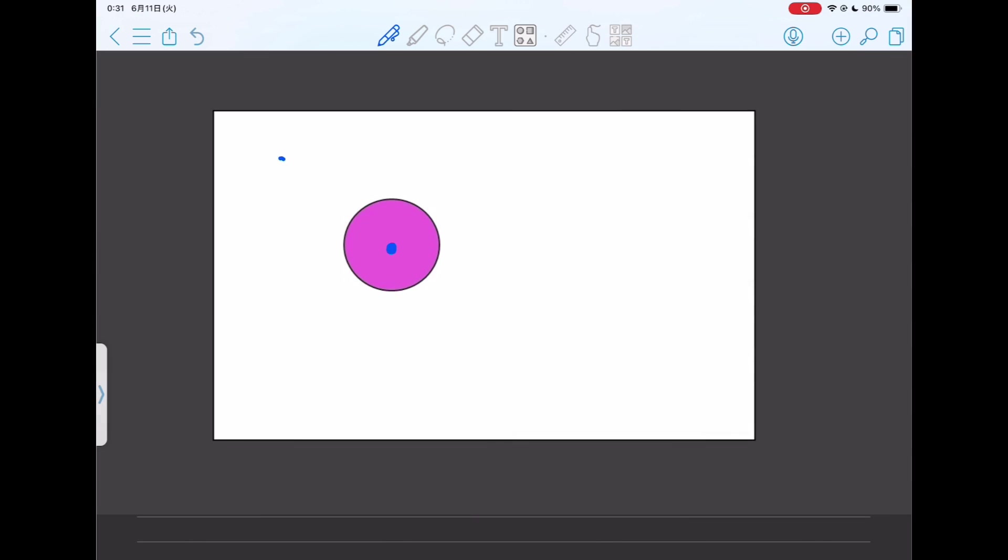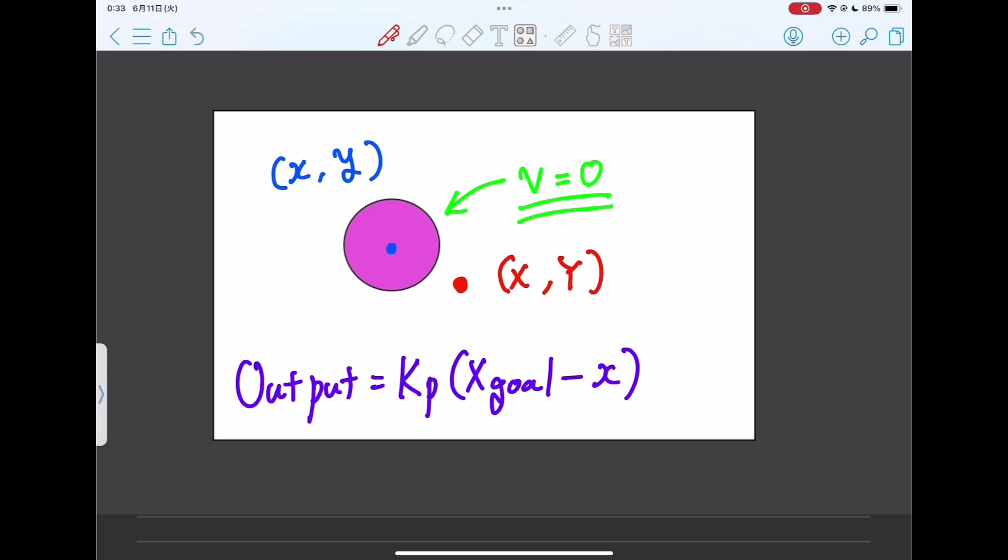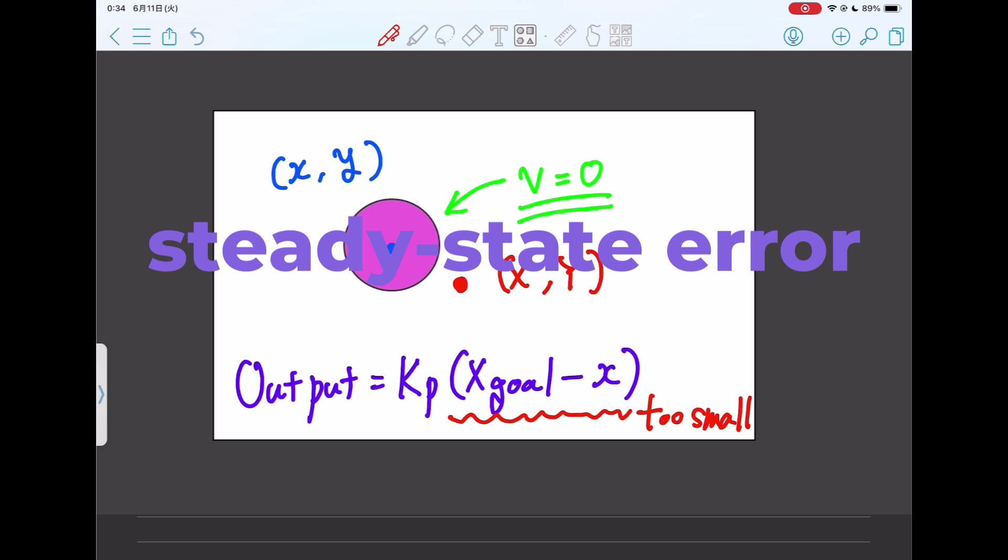And there is one more thing to consider. An image like this was acquired. The ball is very close to the target coordinates and its velocity is zero. That is, the ball has stopped very close to the target coordinates. This is because the ball's coordinates are so close to the target that the output from the proportional control is so small that it cannot be large enough to change the ball's position. This phenomenon is called steady state deviation.